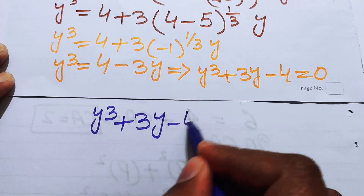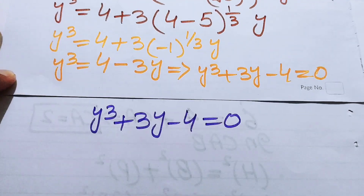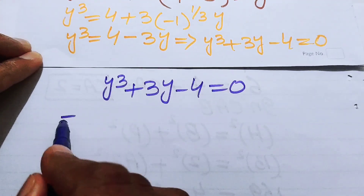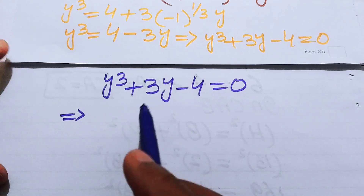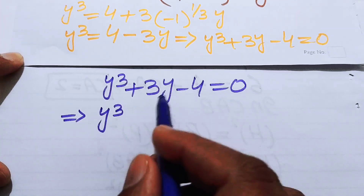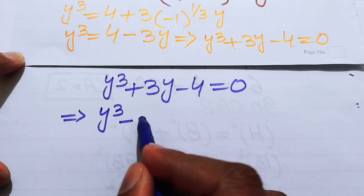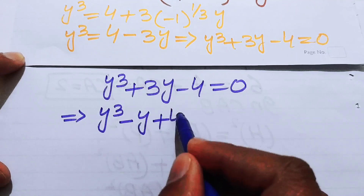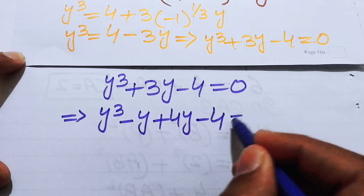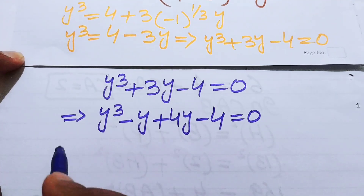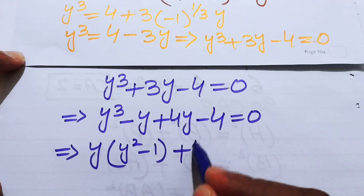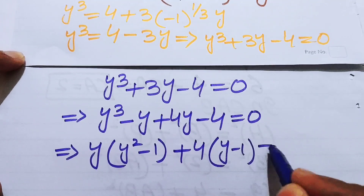We solve this cubic equation by factoring. We break the middle term: y cubed plus 3y minus 4 equals y cubed minus y plus 4y minus 4 equals zero. Taking y common from the first two terms gives y(y squared minus 1), and taking 4 common from the last two terms gives 4(y minus 1).